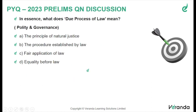Moving on to the prelims discussion. The question is: in essence, what does 'due process of law' mean? Option A: the principle of natural justice. Option B: the procedure established by law. Option C: fair application of law. Option D: equality before the law.